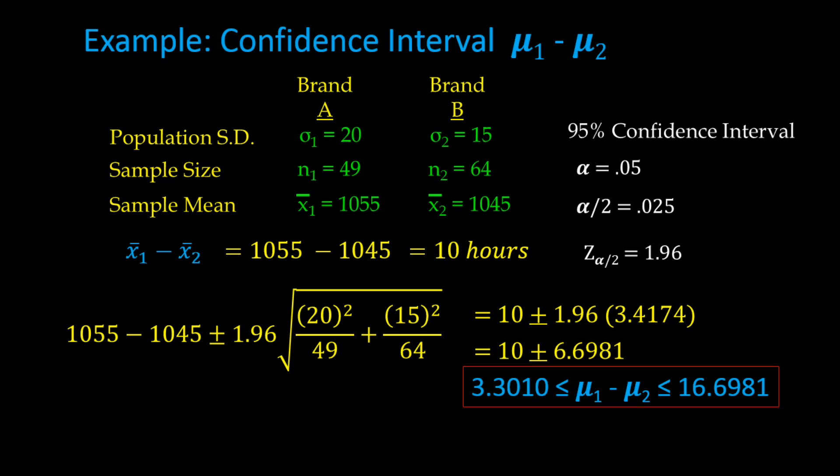The resulting interval ranges from a low of 3.30 hours to a high of 16.69 hours. This represents a 95% confidence interval on the estimated difference between the two population means — in this case, between brand A and brand B light bulbs.